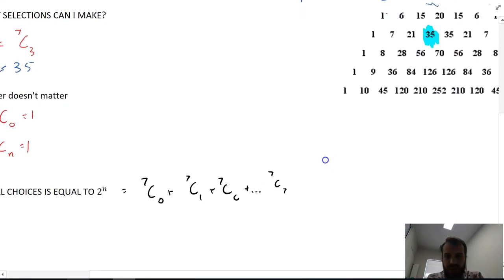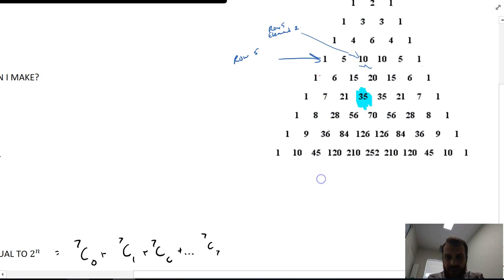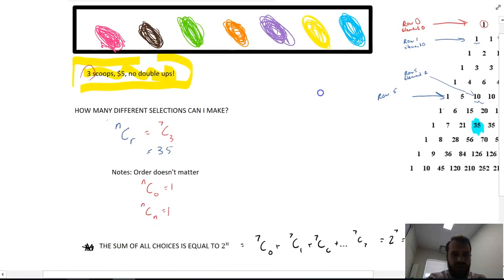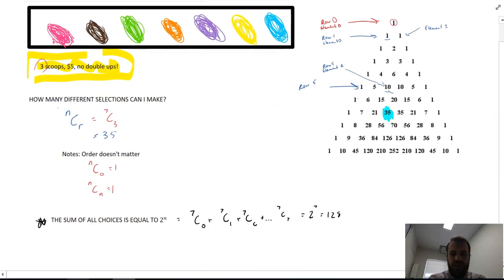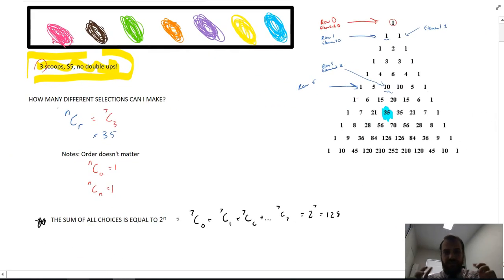Now, if you add all of those together, so that is one plus seven plus 21 plus 35 plus plus 21 plus seven plus one, you get two to the power of seven, which is two, four, eight, 16, 32, 64, 128. So in this particular ice cream shop, you could choose 128 different things to do.